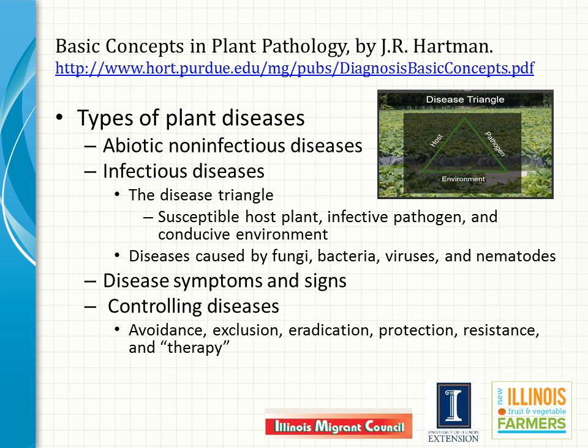Disease management practices always attempt to alter one of these parts of the disease triangle to prevent infections. The pathogens that infect plants include fungi, bacteria, nematodes, and viruses, and management practices for specific crops and diseases differ for different types of pathogens. Dr. Hartman points out that for disease diagnosis, the terms symptom and sign have specific meaning. Symptoms are plant reactions to infection, such as wilt, yellowing, or blight. Signs are the observable presence of the pathogen itself — fungal spores, fungal mycelia or fibers, bacterial ooze, and so on.